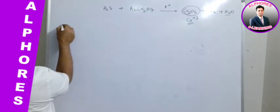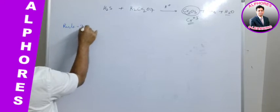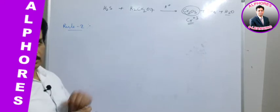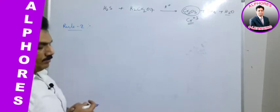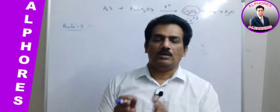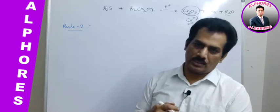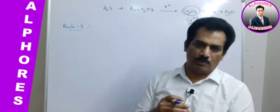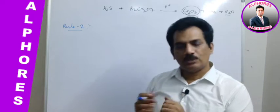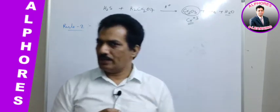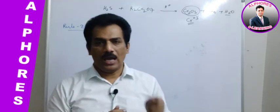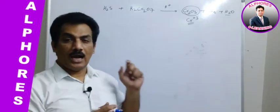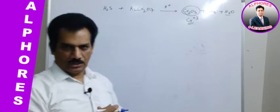I will write only the rule number and orally provide the rule, then write the equation accordingly. Rule number one: we have to write the skeletal equation of the given reaction. The skeletal equation is the ionic form. To write the ionic form, we remove first and second group cations and remove H⁺ from the acid — when all these are removed, we get the ionic or skeletal form of the equation.